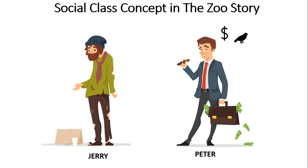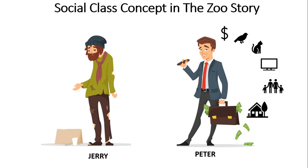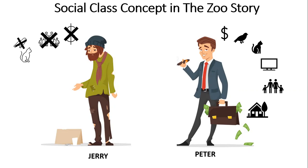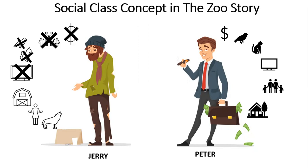Peter has money, a good salary, and a good job. He has two parakeets in his house, a cat, two televisions, a good family with two daughters, and he lives in a wealthy neighborhood. On the other hand, Jerry has no money, no job, no salary. He has no relatives, no friends, no birds, no cat, no television. He lives in a very crowded apartment that is not a good one to live in. He has a landlady who owns a dog that attacks him whenever it sees Jerry.